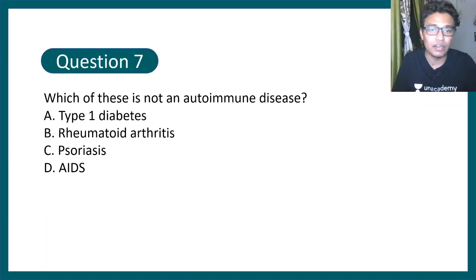Question number 7: which of these is not an autoimmune disease? Psoriasis, type 1 diabetes, rheumatoid arthritis, or AIDS. Let me tell you AIDS is not an autoimmune disease.